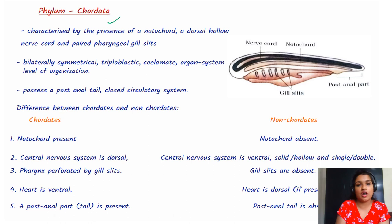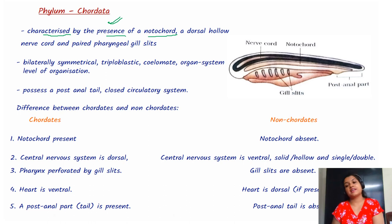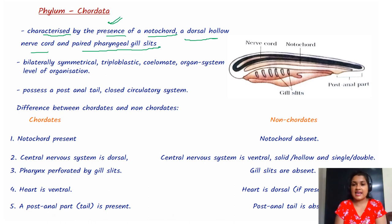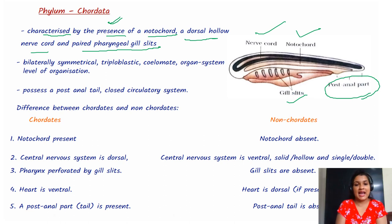Now we are coming to phylum Chordata. The characteristic features are the presence of a notochord, a dorsal hollow nerve cord, and paired pharyngeal gill slits. They also have a post-anal tail. They are bilaterally symmetrical, triploblastic, coelomate, and have organ system level of organization.